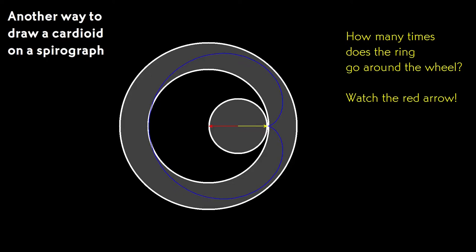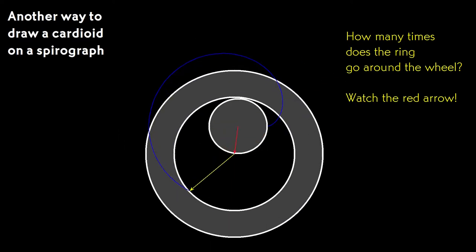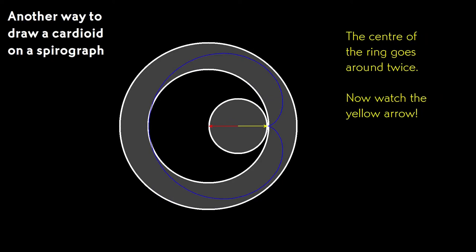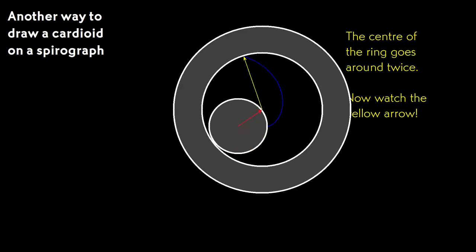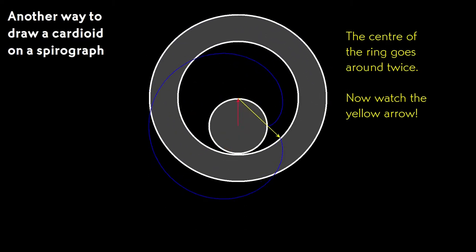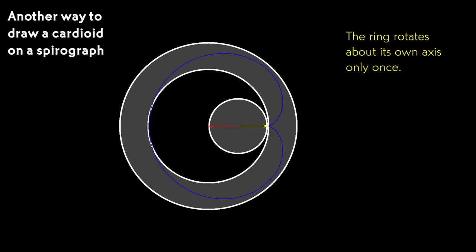Ready? Okay, let's see if you're right. Watch the red arrow, which points to the center of the ring. Can you see that the red arrow went around twice? Now watch the yellow arrow, which shows the ring's rotation around its own axis. And now the yellow arrow goes around only once. This is just reverse using the gear. The gear revolved once and rotated twice. The ring revolves twice but rotates once.